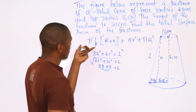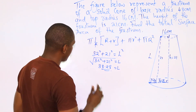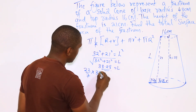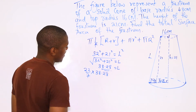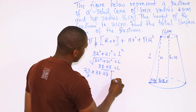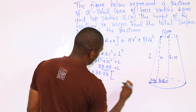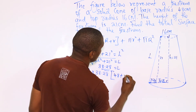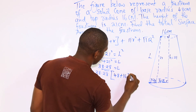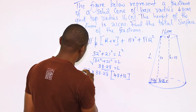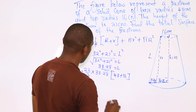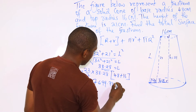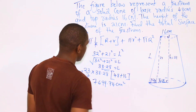Substituting all the values into the formula, we have 22/7 multiplied by 38.28, the slant height, then in brackets the radius of the larger circle, which is 48, added to the radius of the smaller circle, which is 16. When you calculate this using your calculator, you'll have 7699.74 centimeters squared.